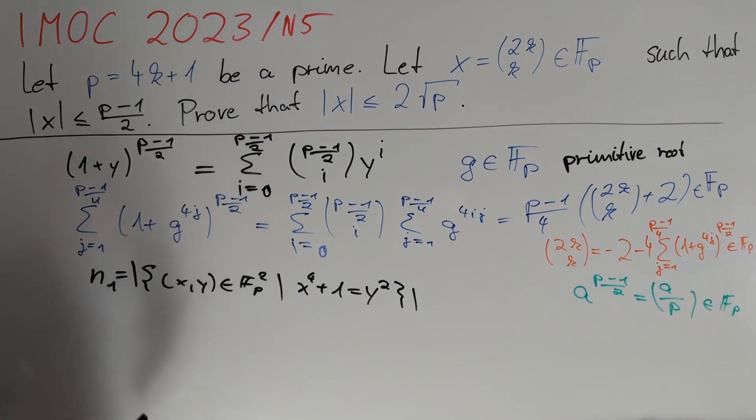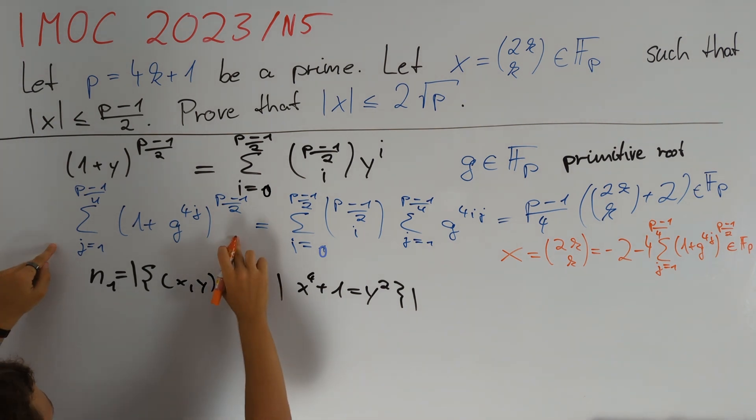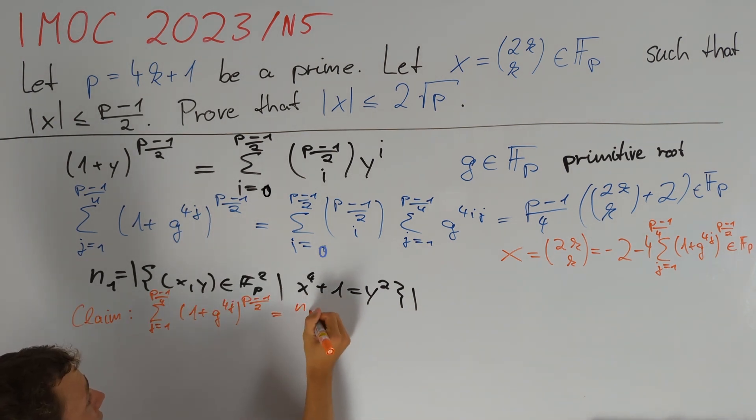In the next chapter that is going to be quite an independent video from this one we will take a look at generalized values of nr. And I claim that our sum equals n1 minus (p-1)/4.